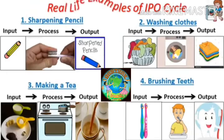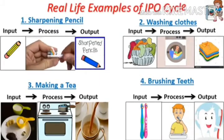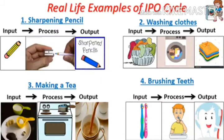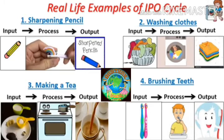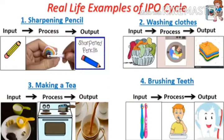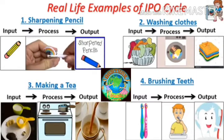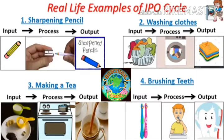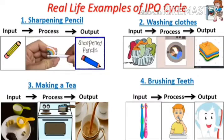IPO means input, processing, and output cycle. In the first example, sharpening a pencil: pencil is input, sharpening is processing, and a sharp pencil is output. In the second example, dirty clothes are input, washing is processing, and clean clothes are output.